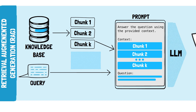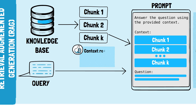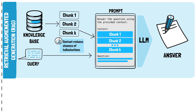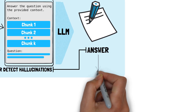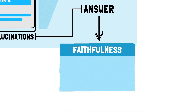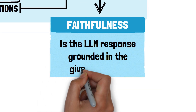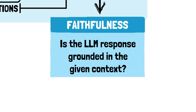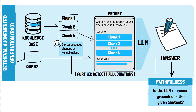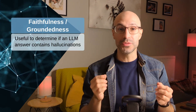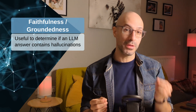By itself, this way of prompting already somewhat reduces the chances of hallucinations, as the LLM is less likely to produce a response not in line with the provided documents. However, if we want to further reduce hallucinations, we can look at the answer and check its faithfulness or groundedness — that is, whether the LLM's output is grounded in the context it was given. Essentially, we're asking if the response aligns with the retrieved documents. Faithfulness or groundedness is the most obvious property you can check to determine if an LLM's answer contains hallucinations.